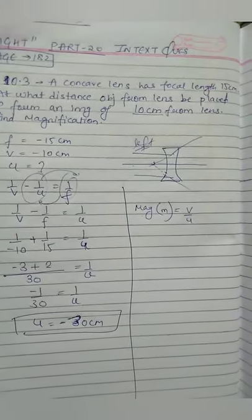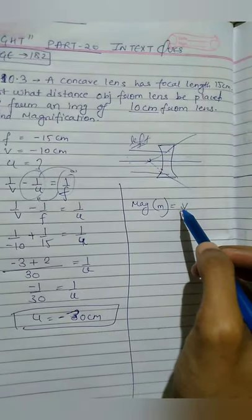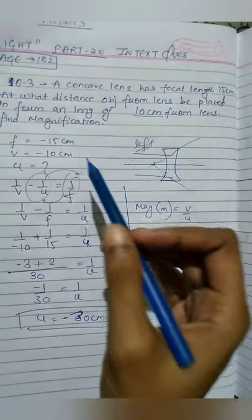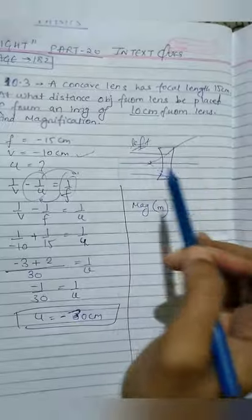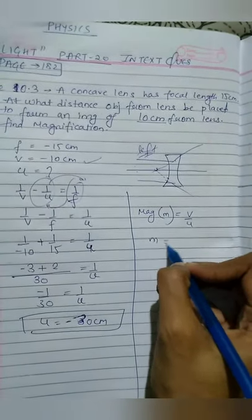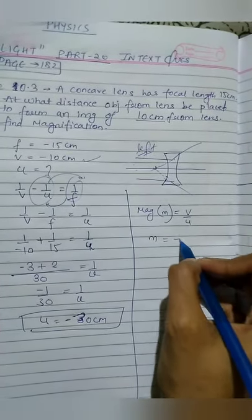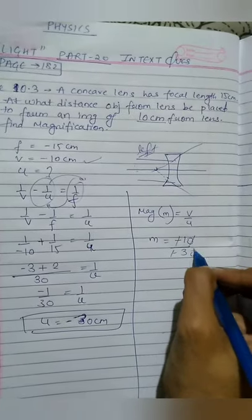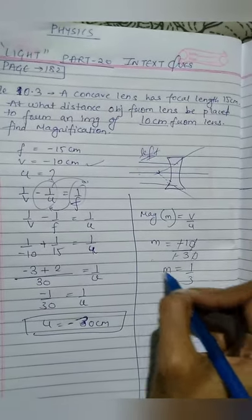Now let's find magnification. We will use the v and u formula since we have both values. Magnification m equals v by u. So m equals minus 10 by minus 30, giving magnification of 1 by 3.